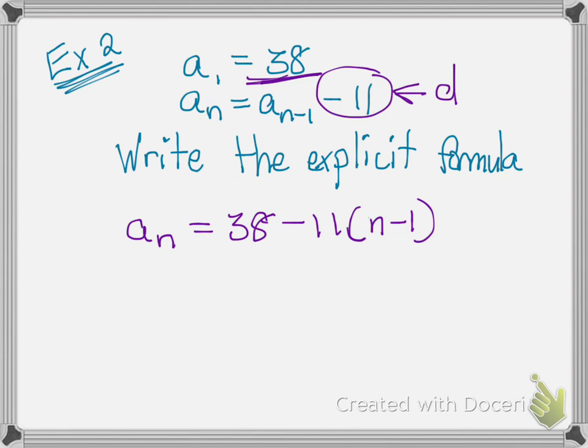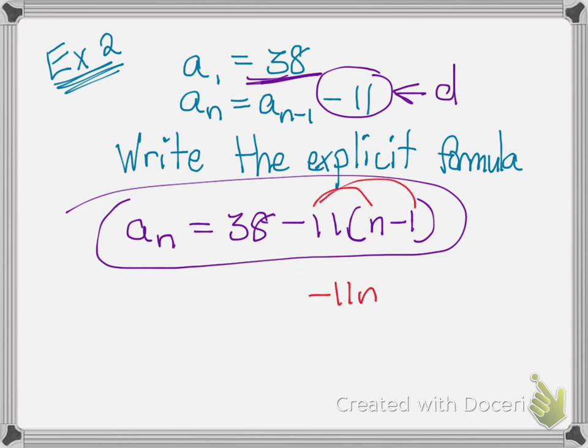And like I stated before, technically, this is it. That's the explicit formula. But if you want to go further to write it in slope intercept form, I'll distribute my negative 11 to get negative 11n plus 11. That's because a negative times a negative is a positive.